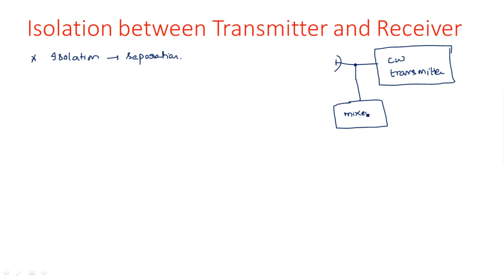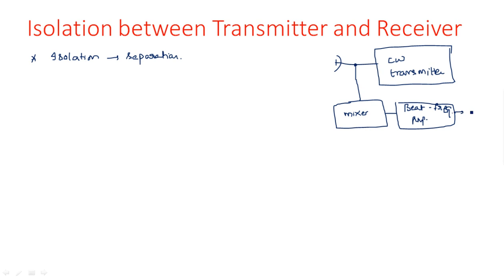The first stage in the receiver is the mixer. The output of the mixer is connected to the beat frequency amplifier, which amplifies the Doppler frequency component. The output is then connected to a pair of earphones or an indicator, which indicates the Doppler frequency shift fd.